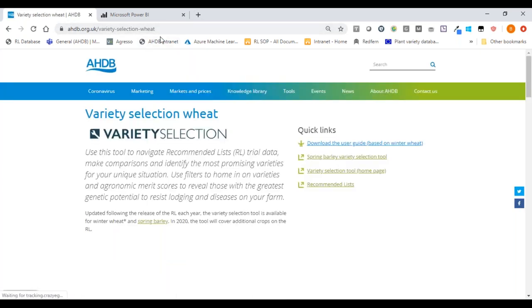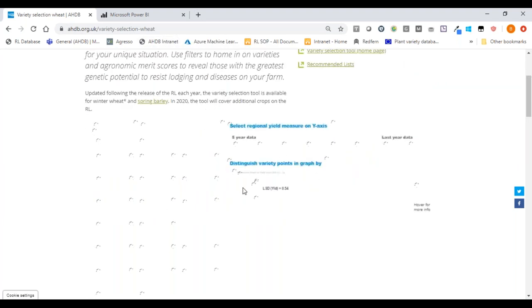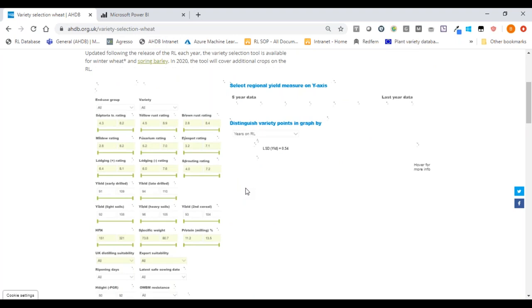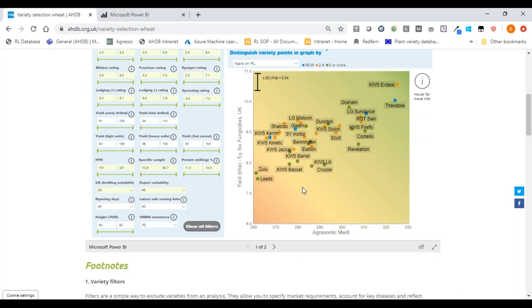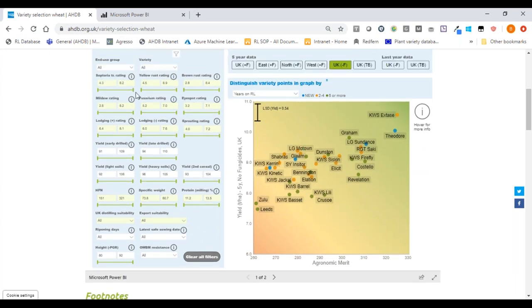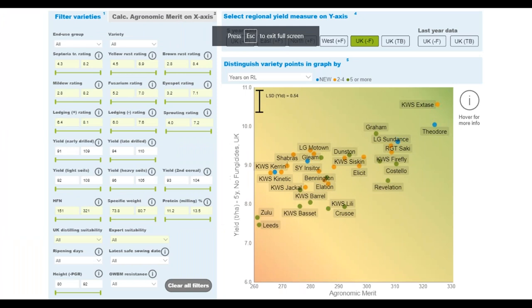I just want to make you aware of where to find it. We have on the AHDB website the main page for all the variety selection tools under VST, so variety selection tool, that's our acronym. Currently, we've got the winter wheat variety selection tool and the spring barley variety selection tool. These are the tools that have been published since December. We've been trying to raise awareness for these tools. I've been going on monitor farm meetings, agronomy events, et cetera, to talk about them.